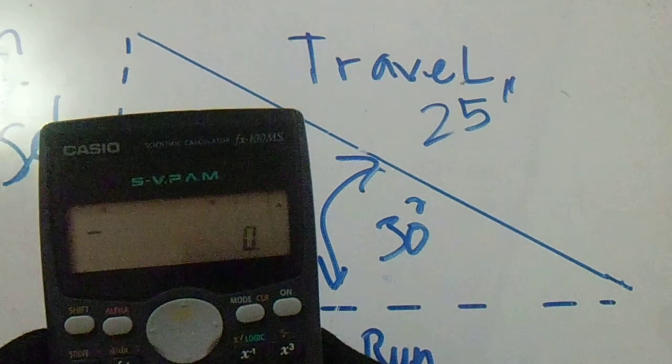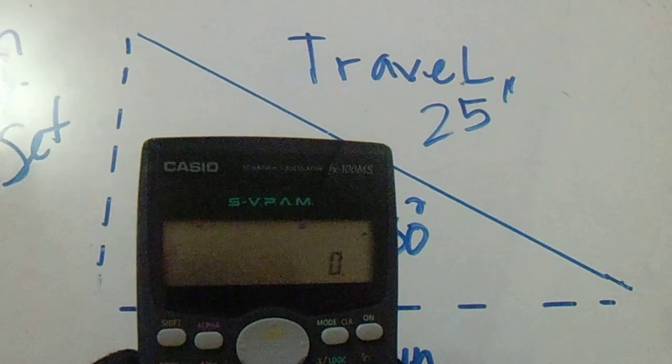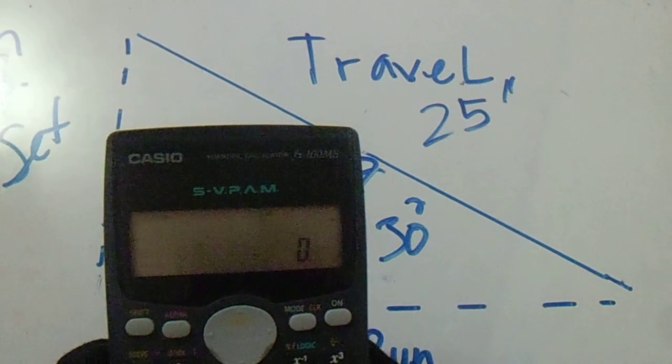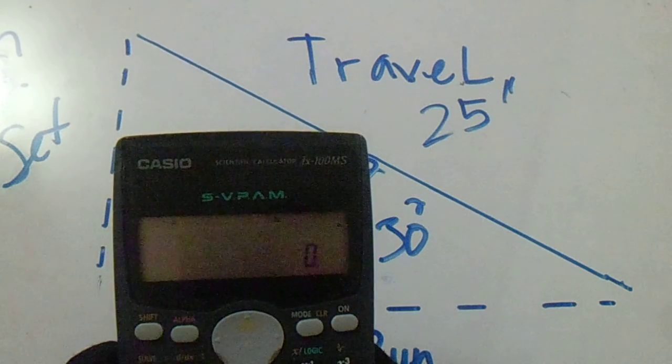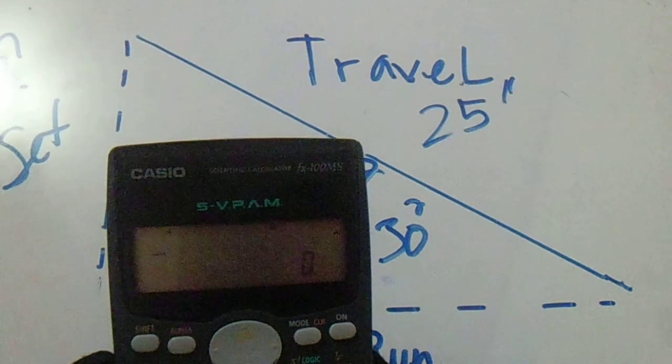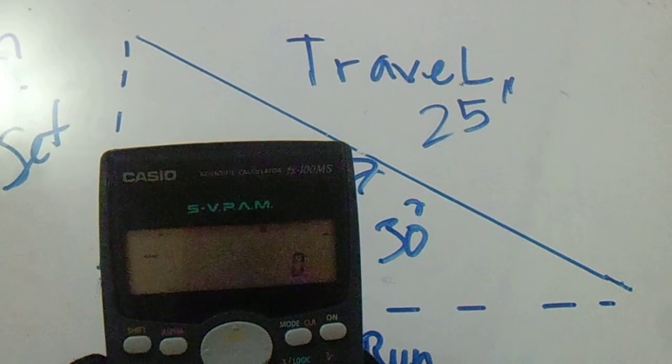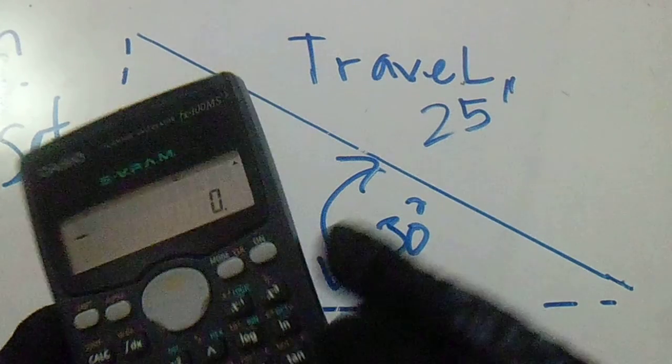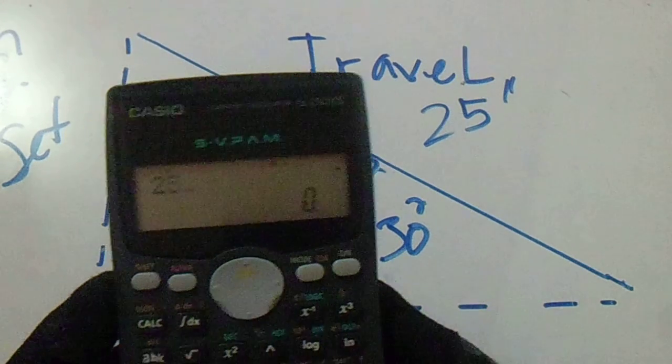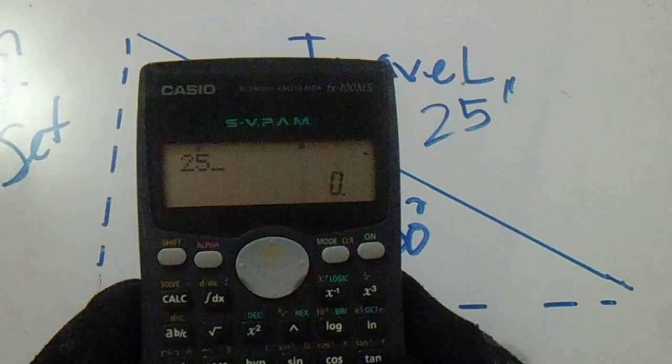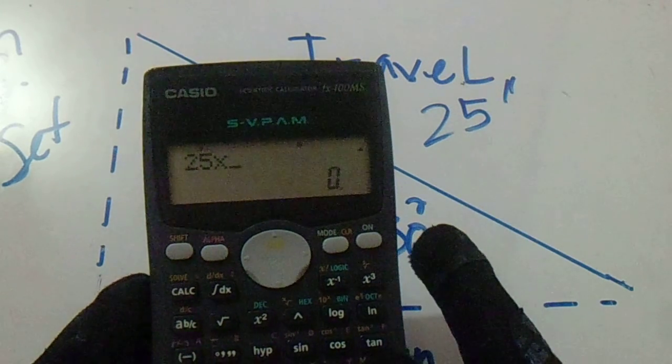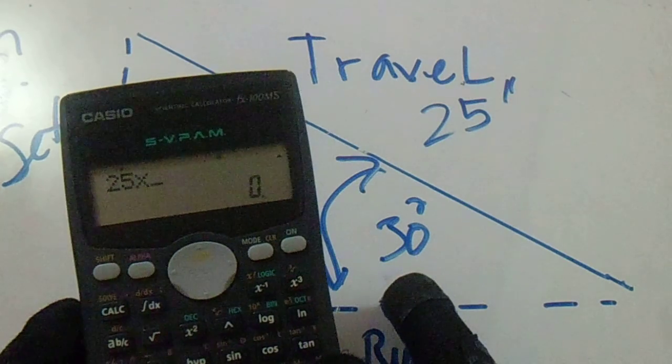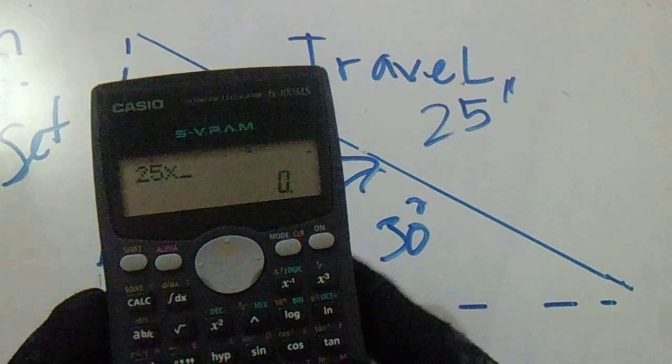The formula for that is: travel, which is 25, multiply it by sin 30 degrees.